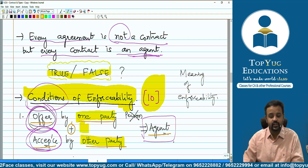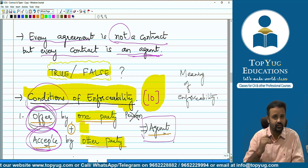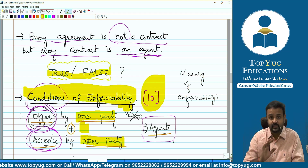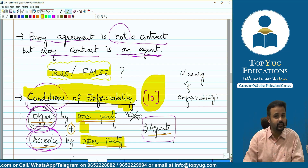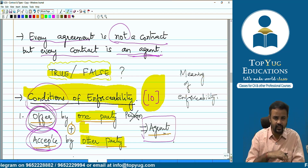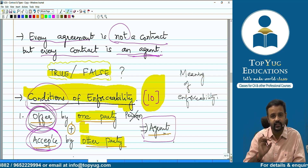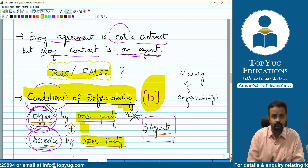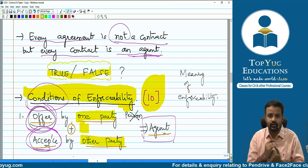Regarding conditions for enforceability from Section 10, all the conditions must be satisfied — not eight out of ten or five out of ten. All conditions must be satisfied. Then only we can say the contract comes into place. That means the agreement becomes a contract, because enforceability is what is required to make an agreement a contract.